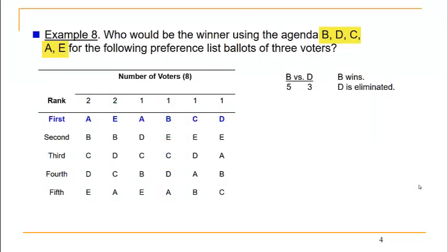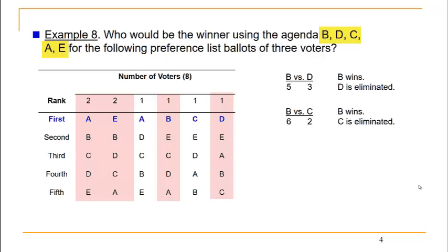Moving down the agenda, next is B versus C. Looking at the preference lists, there are six voters who prefer B to C and only two who prefer C to B, so B wins that head-to-head as well and candidate C is eliminated. Up next is B versus A.